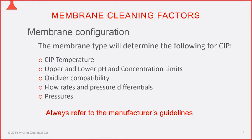Some membrane manufacturers tighten those limits, but generally the standard 2 to 11 range is the upper and lower target. Regarding oxidizer compatibility: the two most common oxidizers are sodium hypochlorite and hydrogen peroxide. Only MF and UF membranes can tolerate limited exposure to oxidizers. RO and nano membranes typically allow zero contact with oxidizers because they are thin film composite membranes very susceptible to oxidizer destruction.